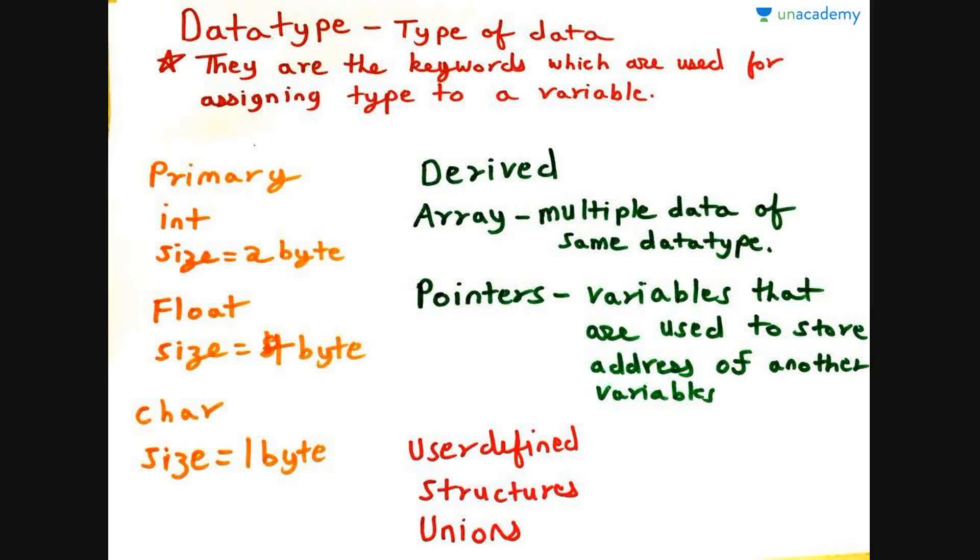Now, data type. If we break the term into data and type, you get the definition - it is the type of data. They are keywords which are used for assigning the type of data. Data types can be further classified into primary, derived, and user-defined.